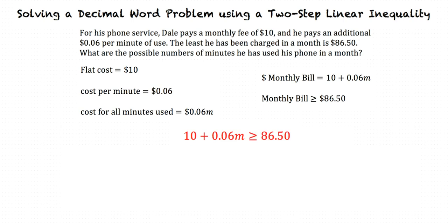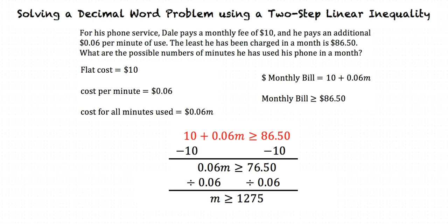All we have left is to solve the inequality for m. First, we subtract 10 from both sides. This gives us 0.06m is greater than or equal to 76.5. Next, we divide both sides by 0.06. Now we are left with m is greater than or equal to 1275.